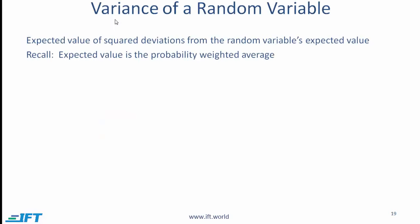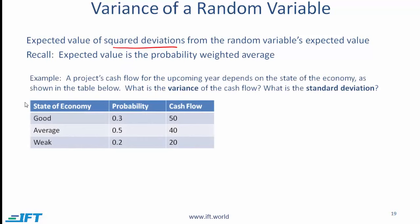Now let us look at the variance of a random variable. The variance is the expected value of the squared deviations from the random variable's expected value. The expected value is simply the probability weighted average, as we saw previously. Using the same example, we now try to calculate the variance and the standard deviation. We are looking for the expected value of the squared deviations from the expected value, which we calculated as 39.